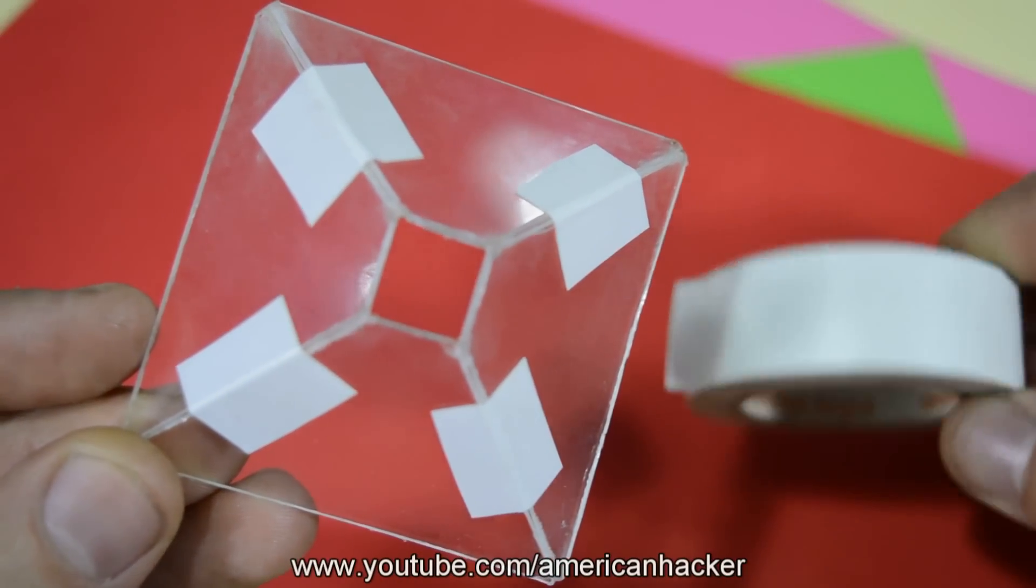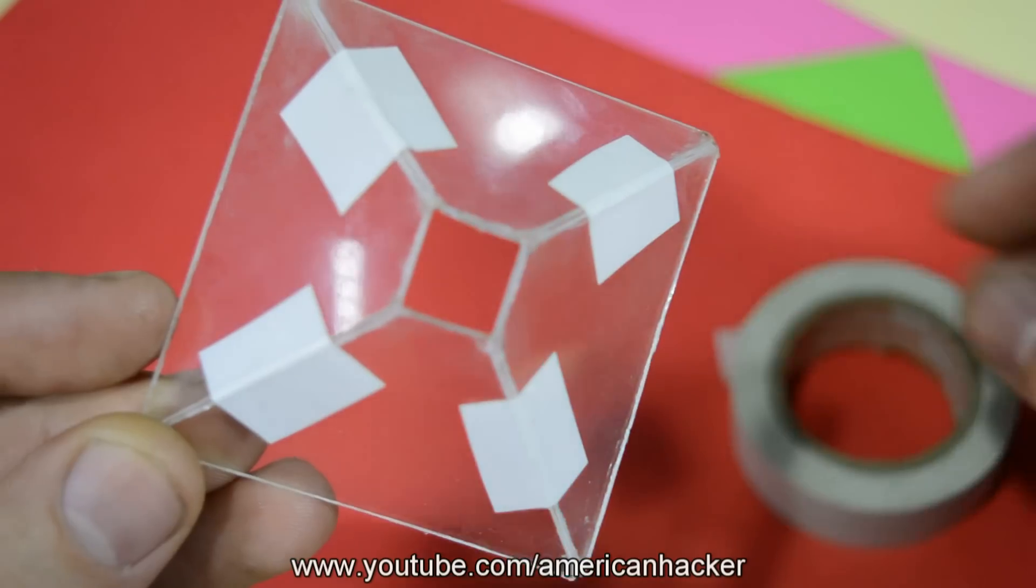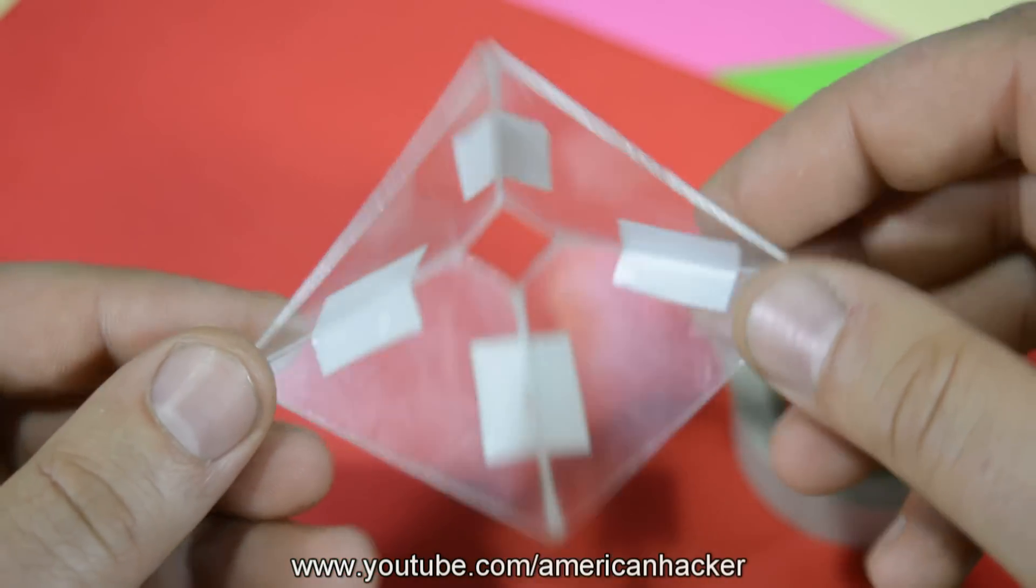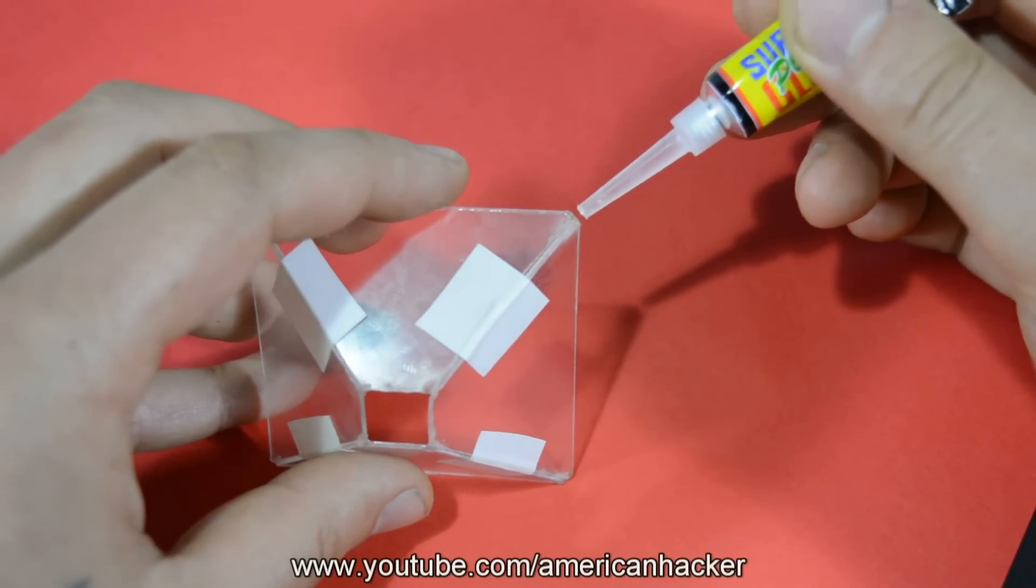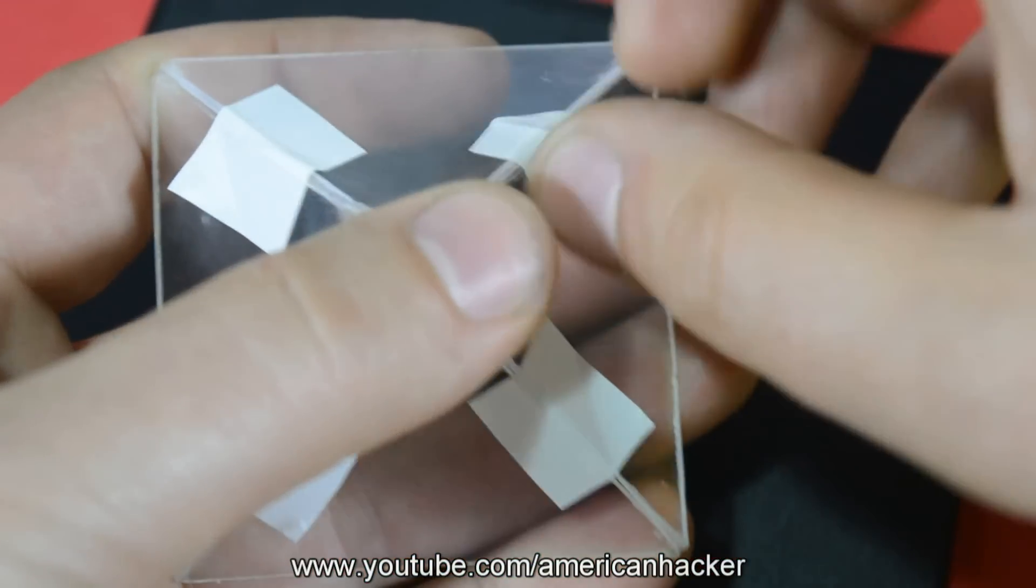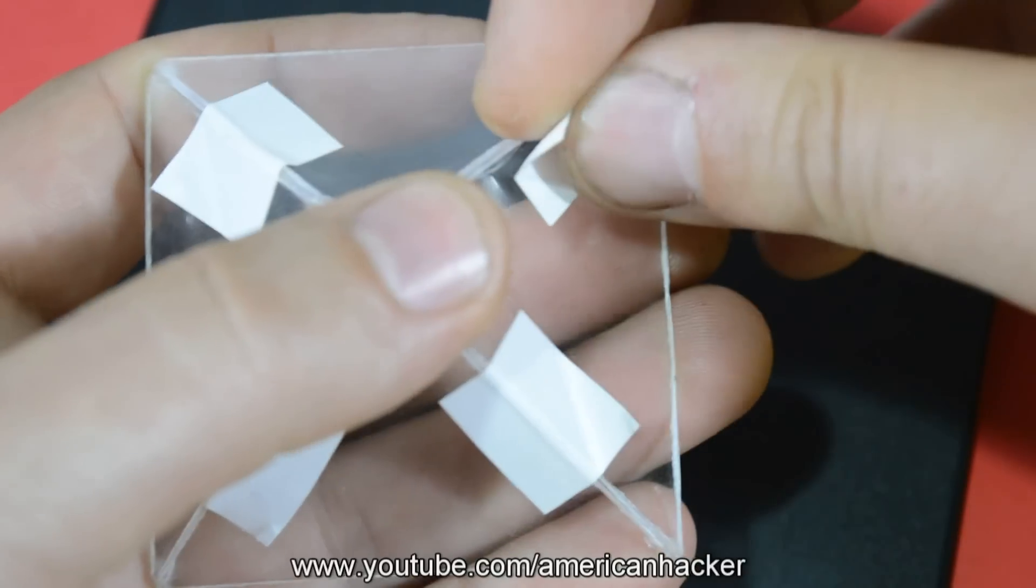Before gluing the pieces with electrical tape you make the form of pyramid. Take the strongest super glue and on edges of pyramid put one drop of glue on each corner. Leave it to dry for about 5 minutes.